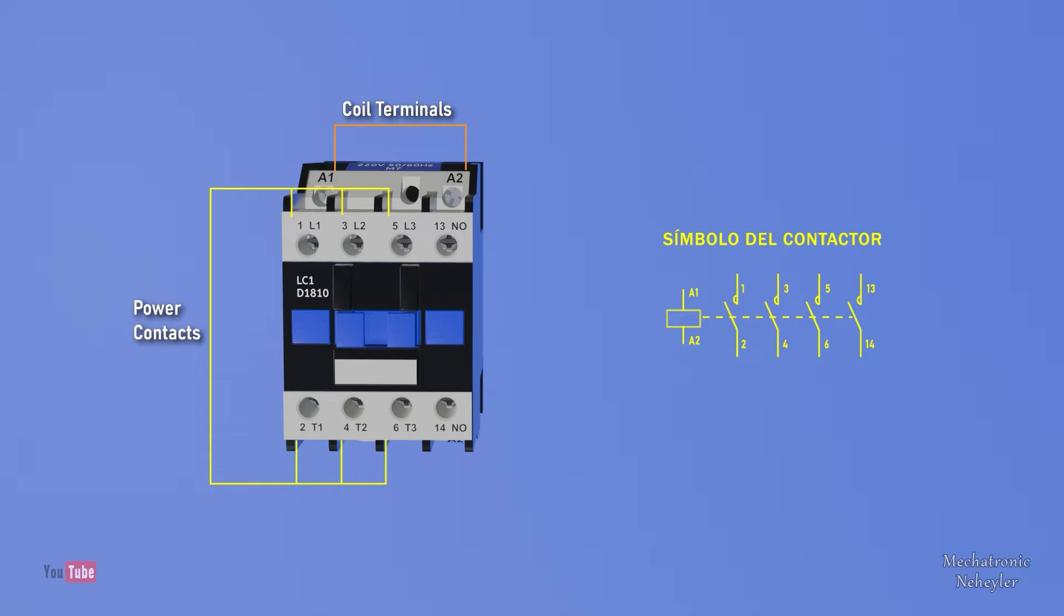Meanwhile, terminals 13 and 14 make up the auxiliary contact, which serves to generate self-retention in the contactor.